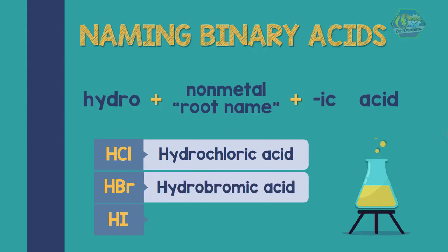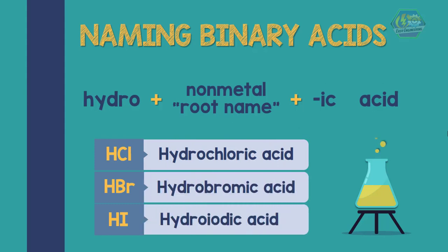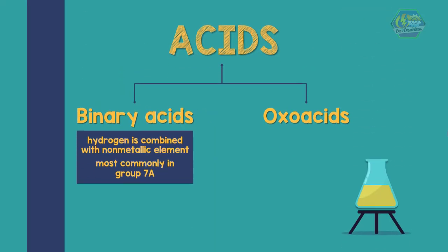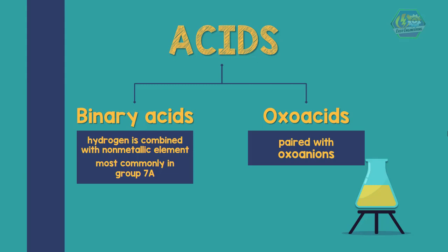For example, the anions from Group 7A, when paired with H+, become: hydrochloric acid, hydrobromic acid, and hydroiodic acid.